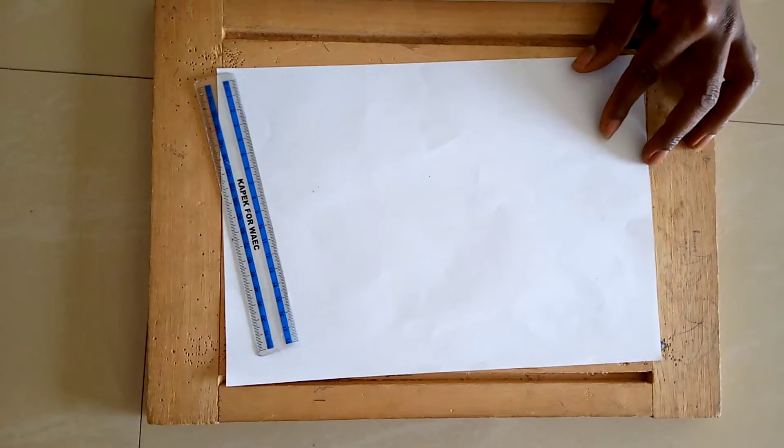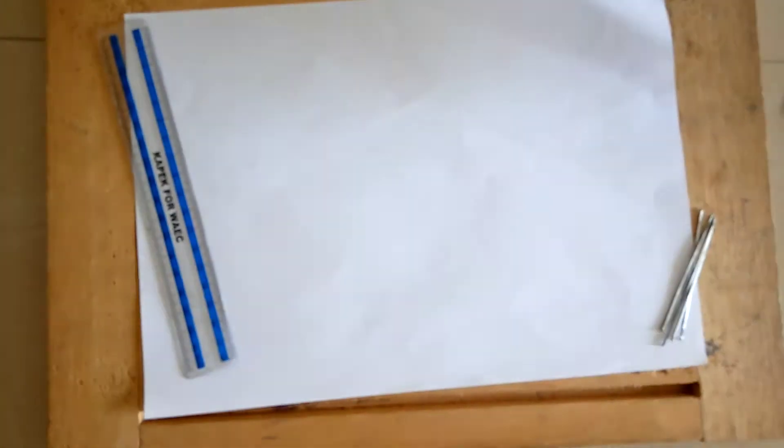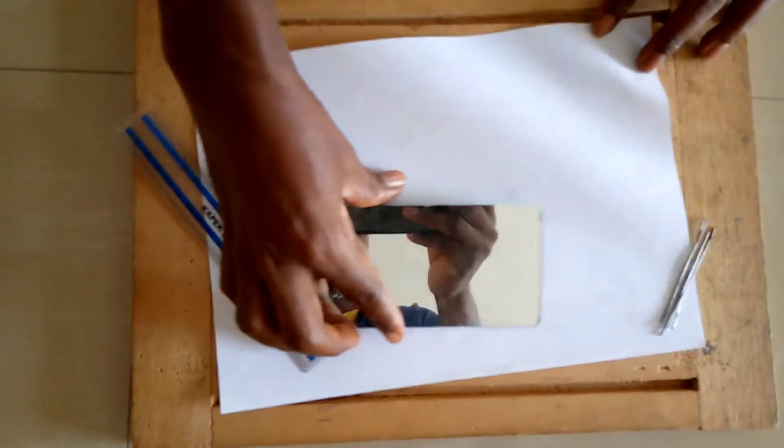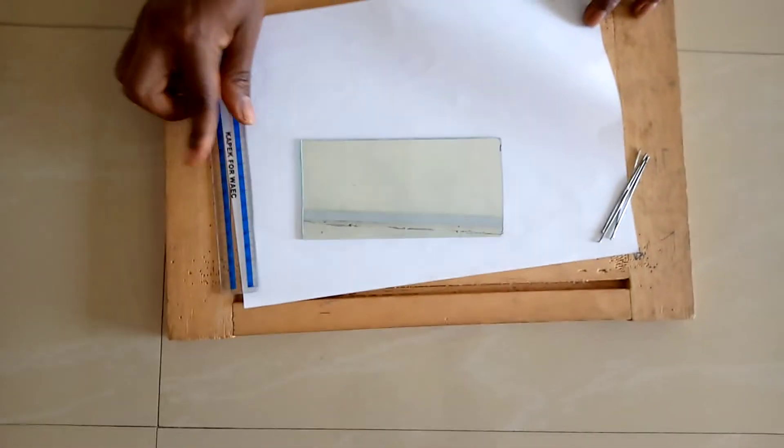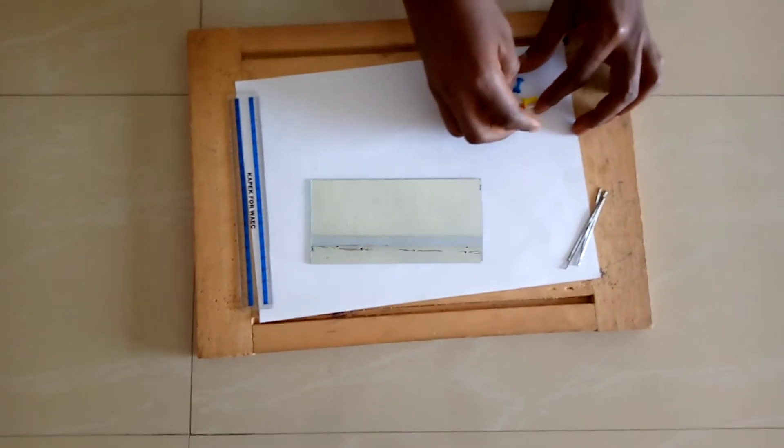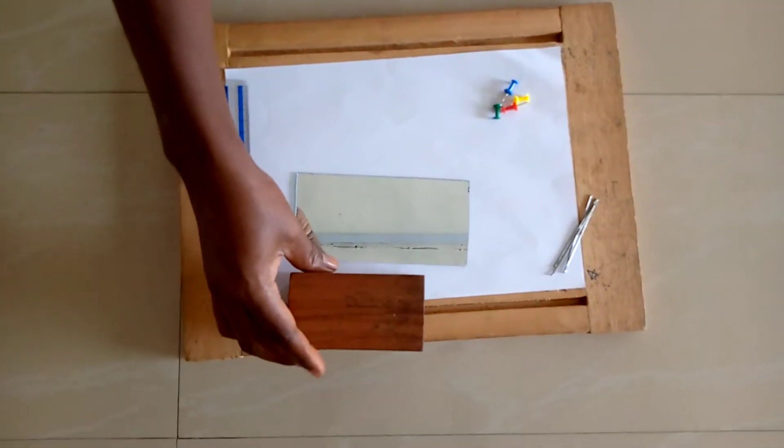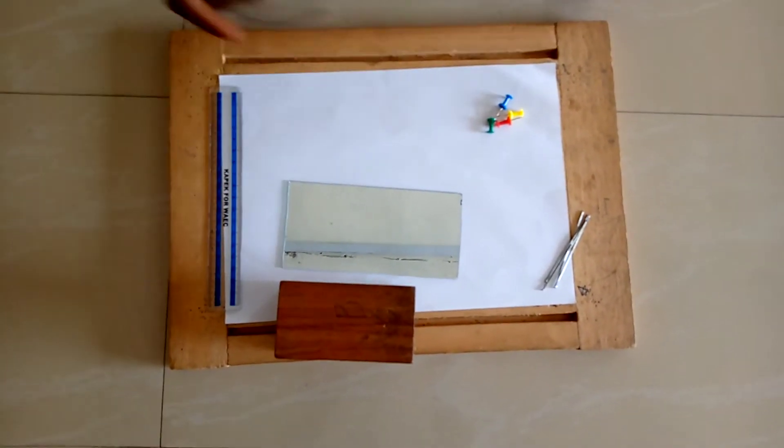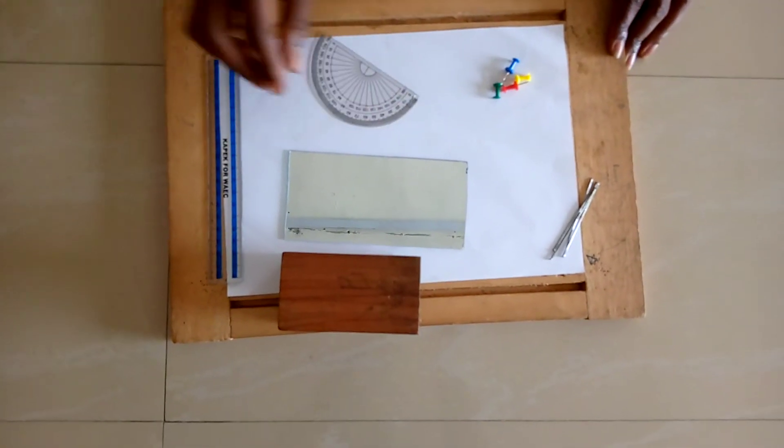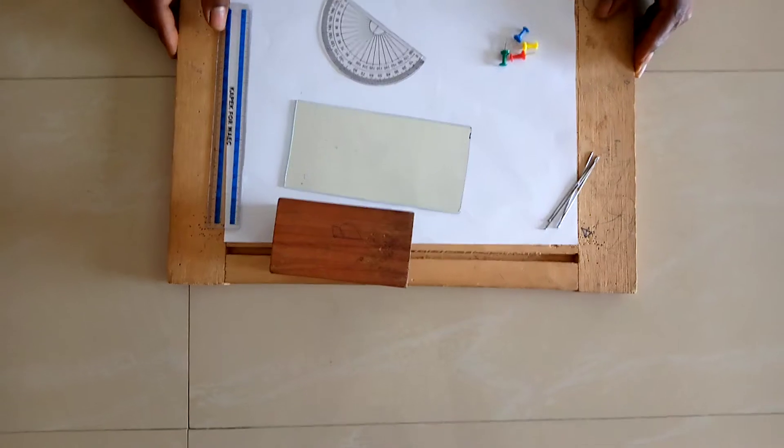...four optical pins, a plane mirror, thumb pins, four thumb pins to fasten the paper on the optical board, a wooden block, and a protractor which is used to measure angles. So let's get started.